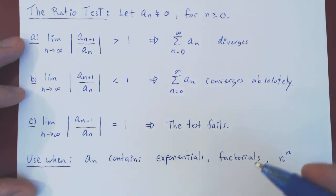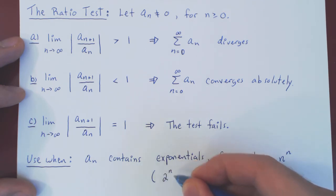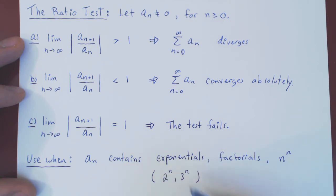And by exponentials, of course, we mean 2 to the n, 3 to the n, and so forth—an exponential where the base is larger than 1. Factorial, quite simply, n factorial. But of course, you could have other factorials, like 2n factorial and so forth.